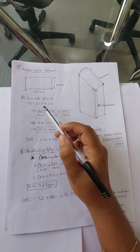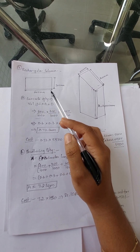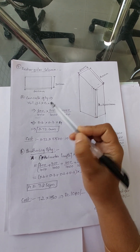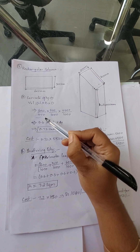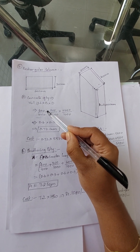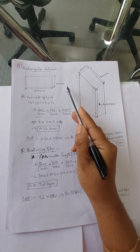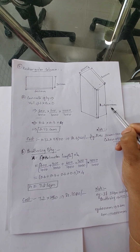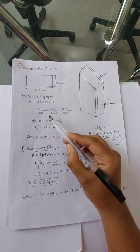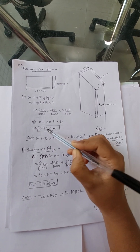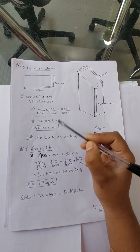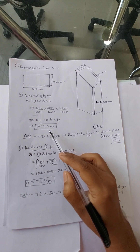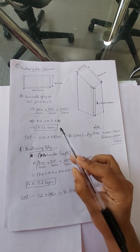To find the concrete quantity for this rectangular column, Volume = Length × Breadth × Height. Length = 600 mm ÷ 1000 = 0.6 m, Breadth = 300 mm ÷ 1000 = 0.3 m, Height = 4000 mm ÷ 1000 = 4 m. So 0.6 × 0.3 × 4 = 0.72 cubic meters of concrete is required for these dimensions.